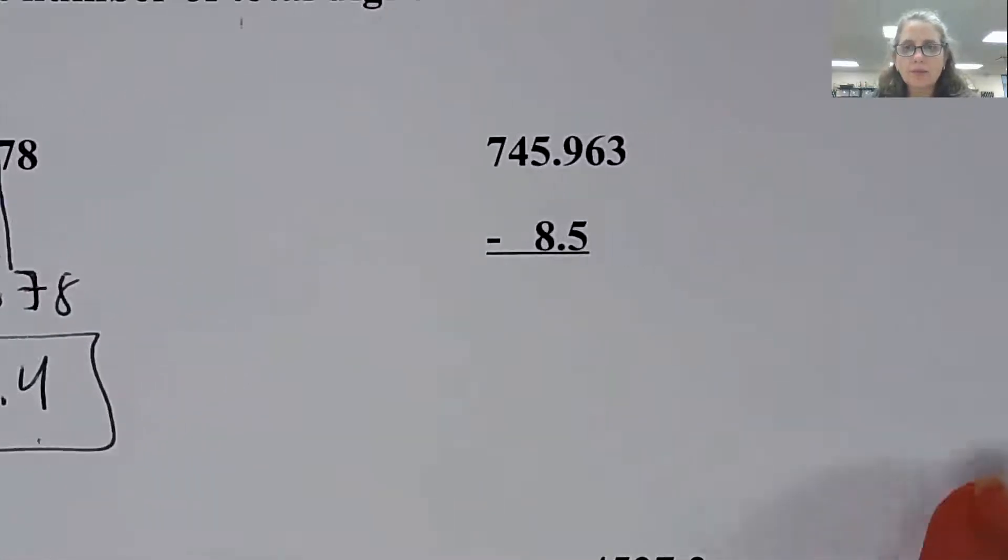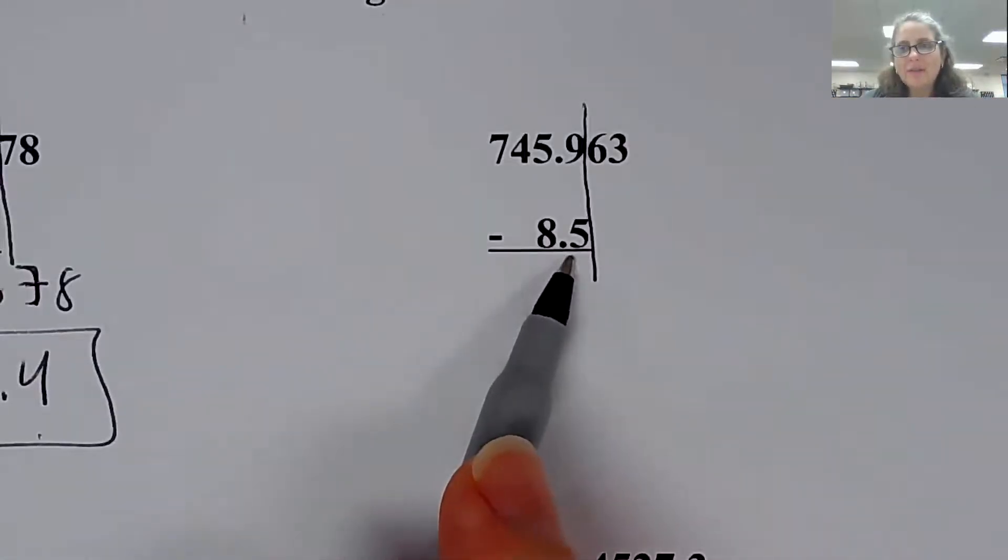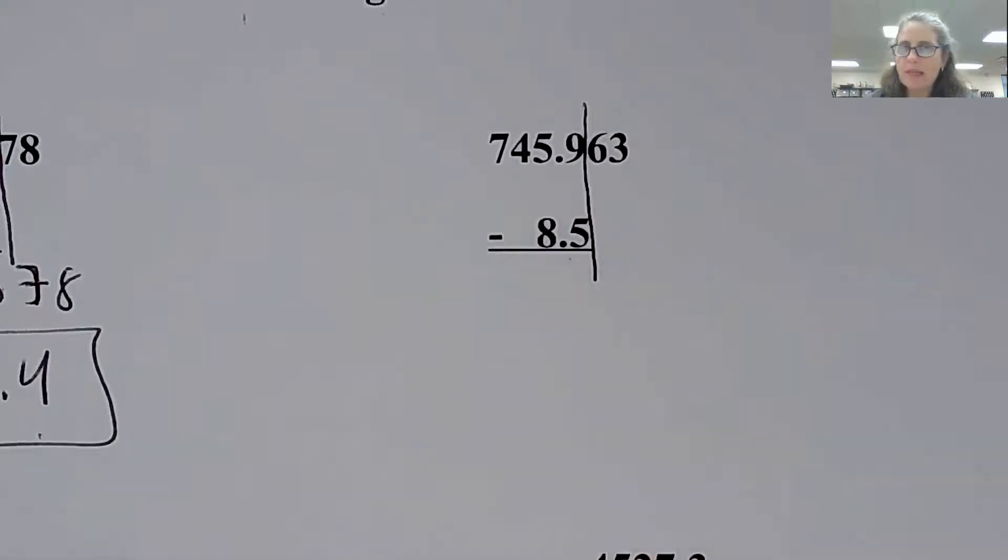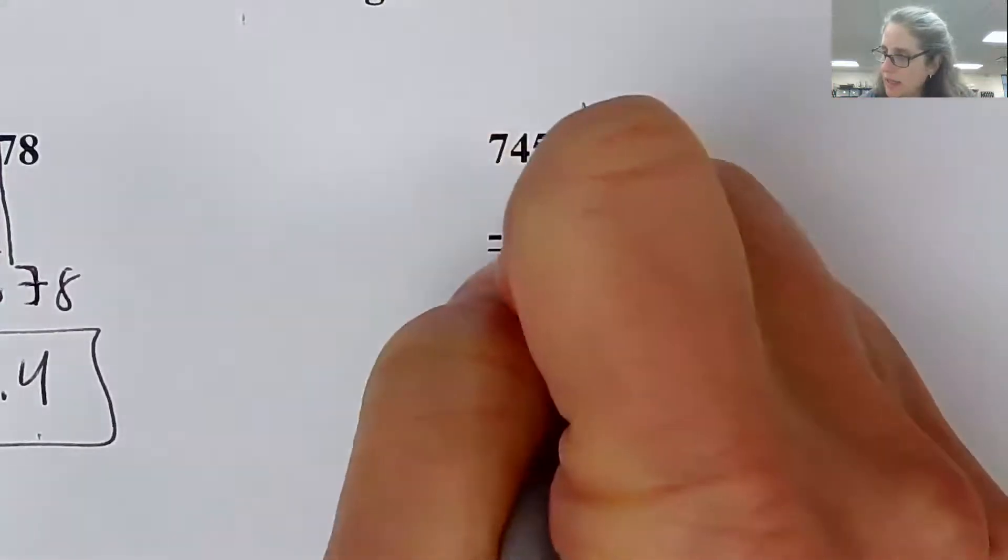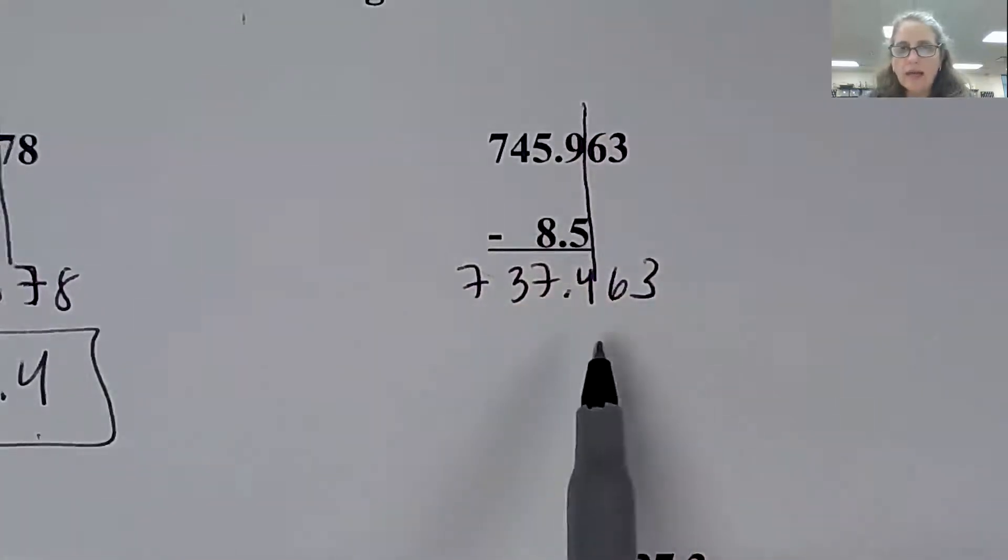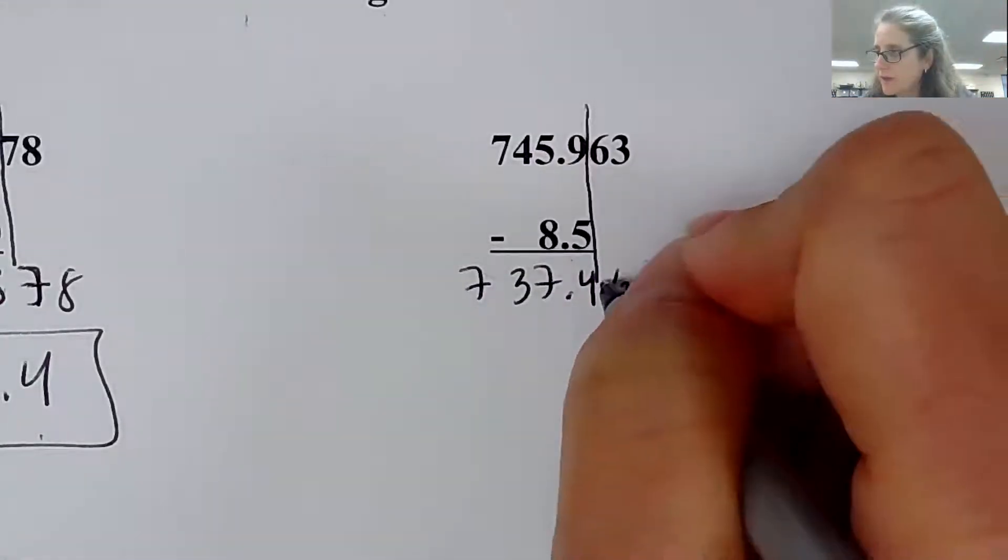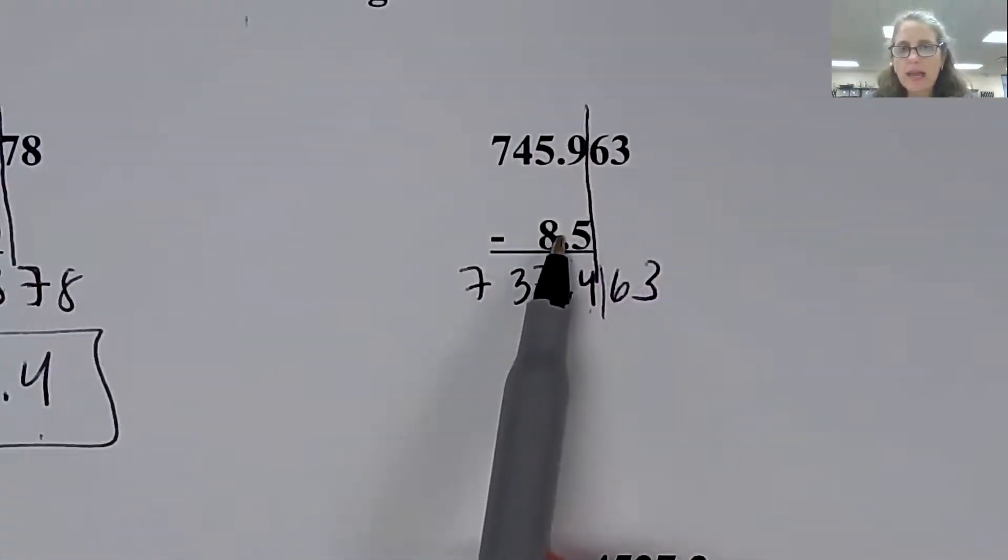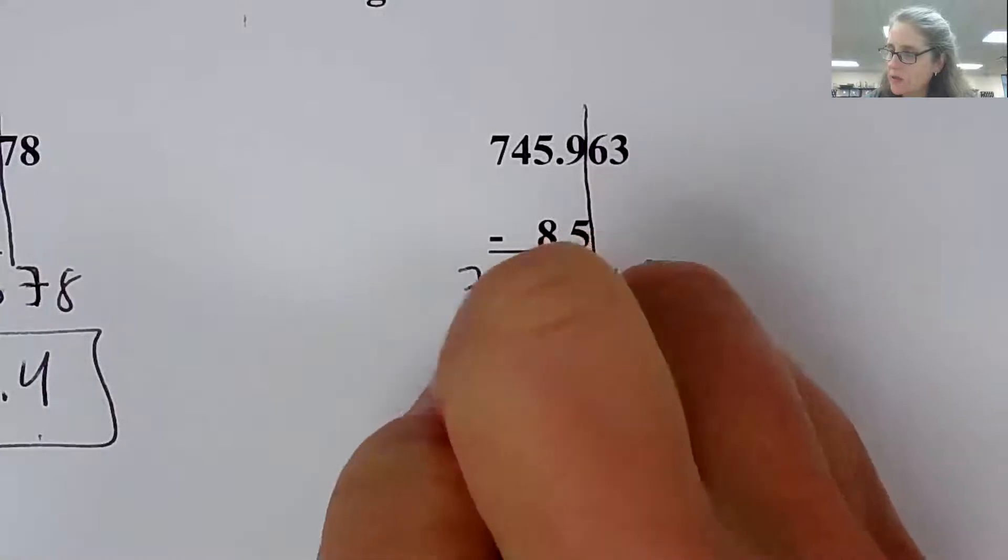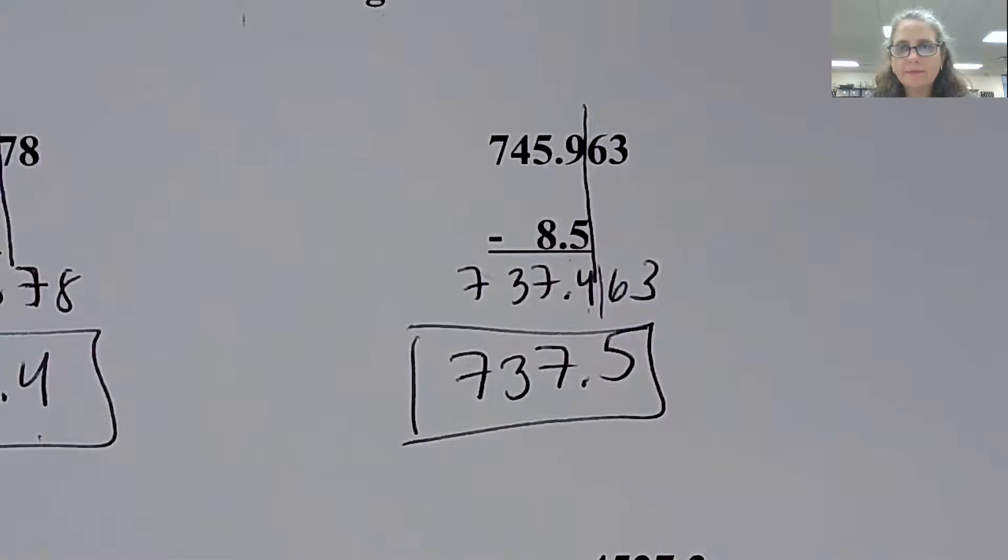If you draw a line through where the least number of digits after the decimal, so if you line it up like this, it might be an easier visual for you to see. Do the math in your calculator. And then write out the full answer and keep it in your calculator and then round to correct sig figs. So I can only have one digit after the decimal because of the 8.5. So what's next to the four is a six. So my final answer is 737.5. That is adding and subtracting.